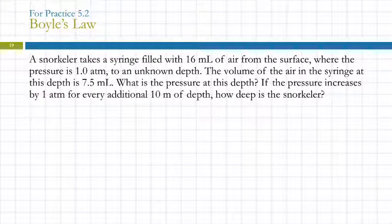So this seems a little mean to me. Here's our first gas law problem, and it's not a super straightforward one. But that's okay, because we're in Chem 1A, and we can handle this. So we read the problem. A snorkeler takes a syringe filled with 16 milliliters of air from the surface, where the pressure is 1 atmosphere to an unknown depth. The volume of the air in the syringe at this depth is 7.5 milliliters. What is the pressure at this depth? If the pressure increases by 1 atmosphere for every additional 10 meters of depth, how deep is the snorkeler?